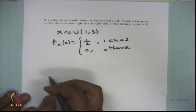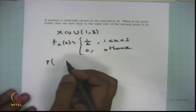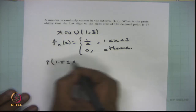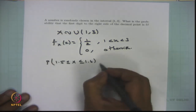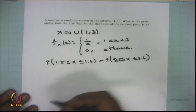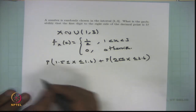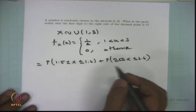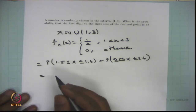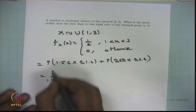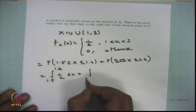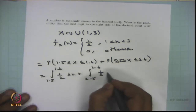The question is the probability that the first digit to the right of the decimal point is 5. This is possible when x lies between 1.5 to 1.6, as well as when x lies between 2.5 to 2.6. The required probability is the probability of x in [1.5, 1.6] plus the probability of x in [2.5, 2.6]. Since it is a continuous type random variable, we integrate: the integral from 1.5 to 1.6 of (1/2) dx plus the integral from 2.5 to 2.6 of (1/2) dx.